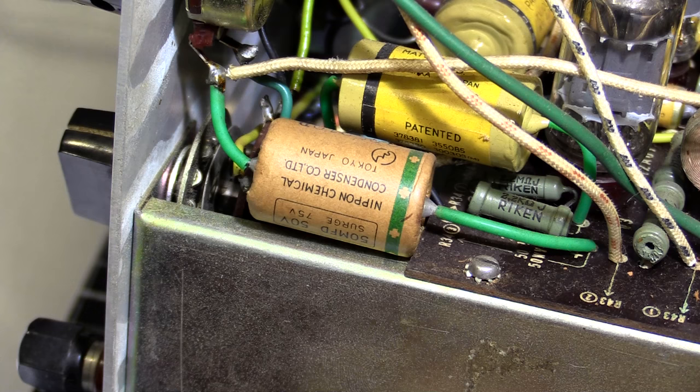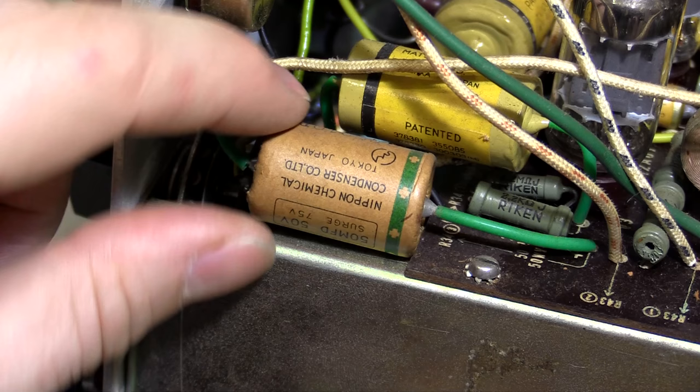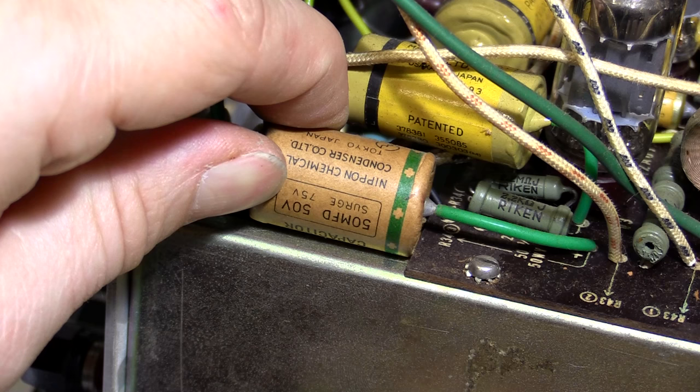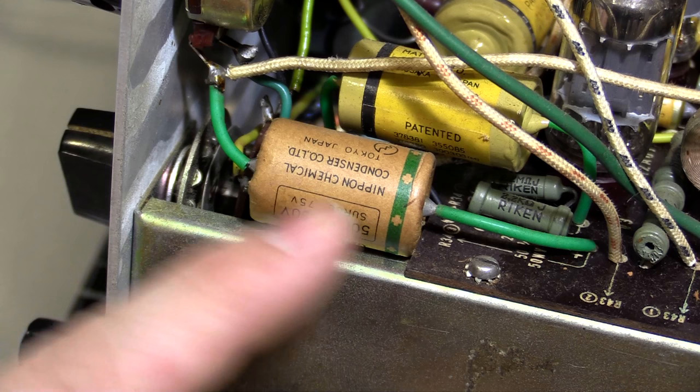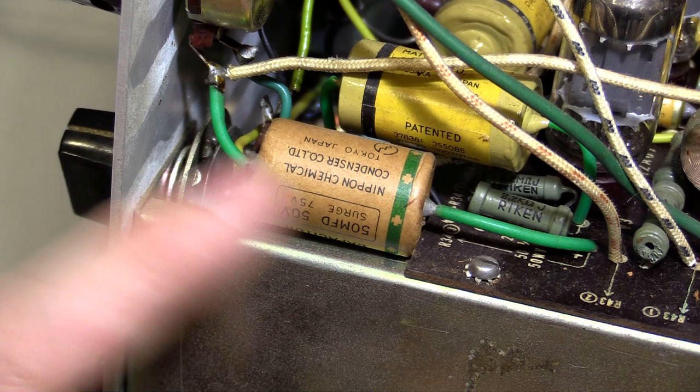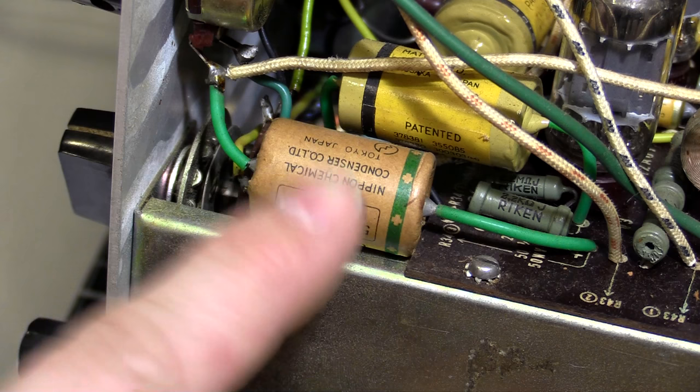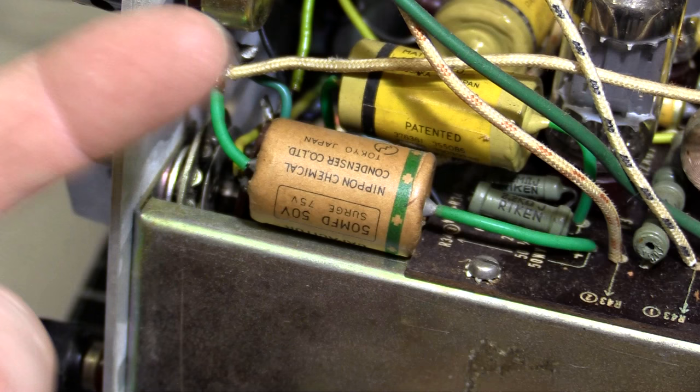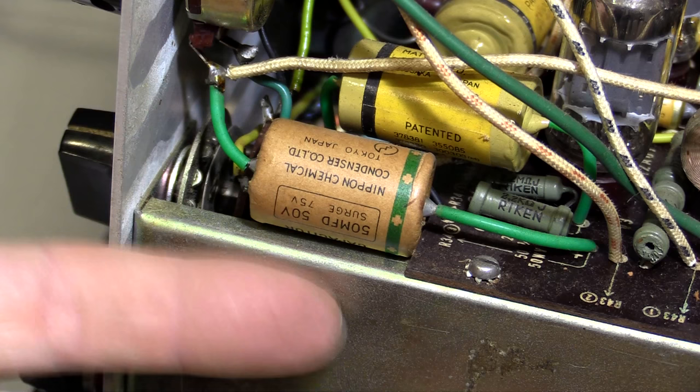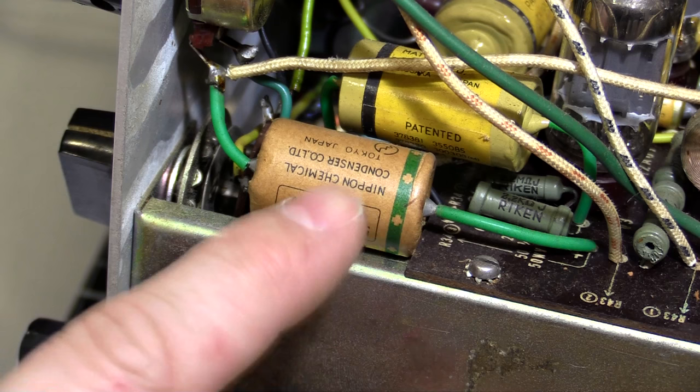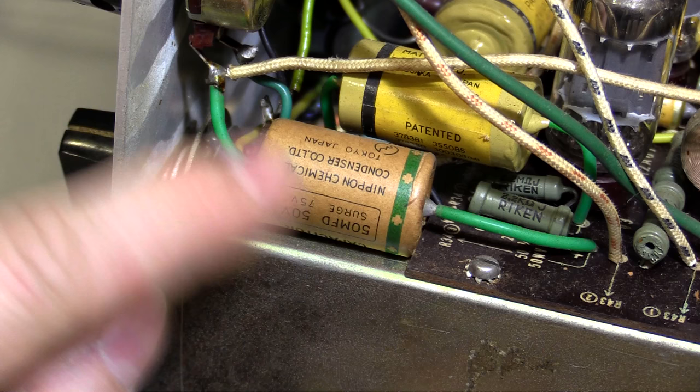This one's old school. Look at that thing. Nippon Chemicon, Tokyo, Japan. This thing's made in Tokyo. Old capacitor - 50 microfarad, 50 volts, surge 75 volts. The old caps had a lot of leeway in their voltage ratings. Nowadays you can't go even five volts over, but the old ones you could push the limits a little bit and they wouldn't really care. I'll definitely replace these with maybe 100 volts or 120. Even a 120 volt cap, 50 microfarad, is going to be a lot smaller than this thing.